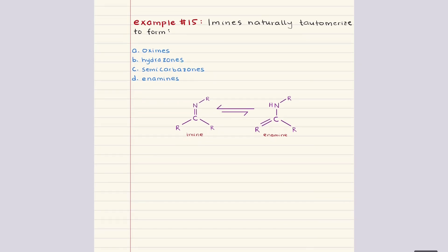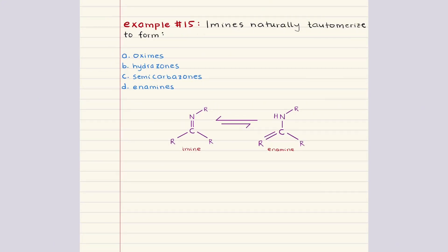Our last problem says imines naturally tautomerize to form blank. As noted in lecture, imines undergo tautomerization to form enamines. This process involves the movement of a hydrogen atom and a shift in the position of the double bond. So the correct answer is D. I hope this has been helpful — please let me know if you have any questions, comments, or concerns down below. Good luck, happy studying, and have a beautiful day, future doctors!